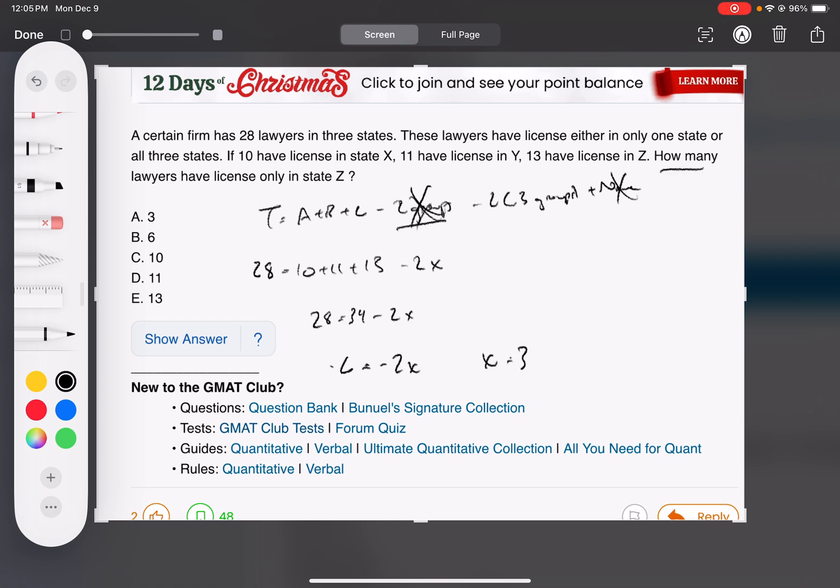X equals three, so how many lawyers have license only in state Z? There's 13 in state Z and there's three people that are licensed in all three states, so I gotta take those three people out. They're among those that are licensed in Z, but they're licensed in the other states too. I want to take them out to get how many are only licensed in state Z. That's 10. Done.